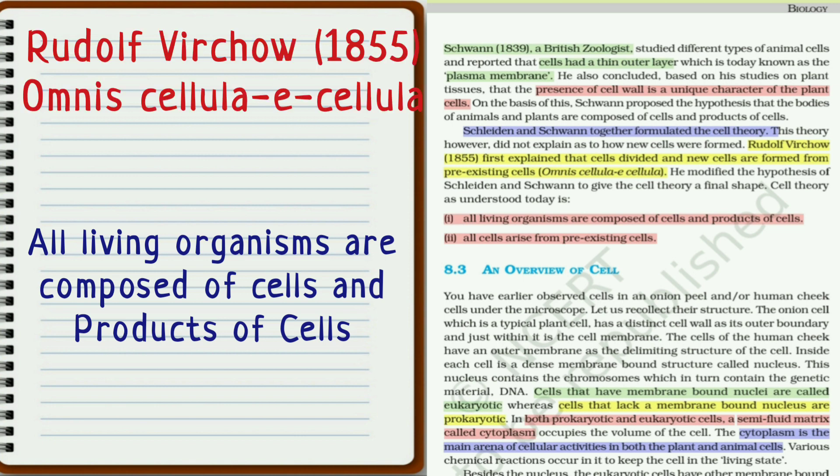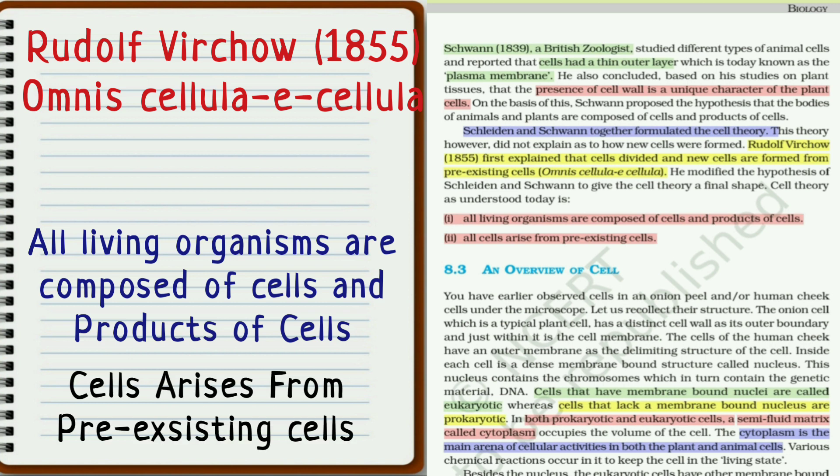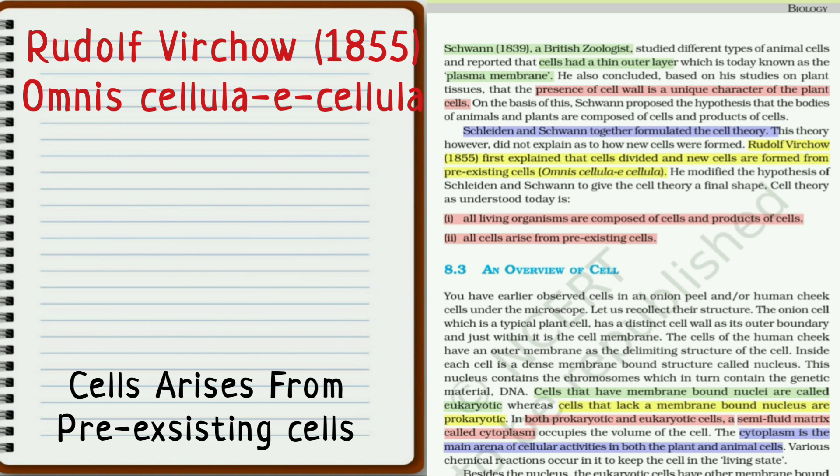Later, Rudolf Virchow in 1855 gave a theory called 'Omnis Cellula e Cellula' in which he explained from where new cells were formed. The statement goes like this: all cells arise from pre-existing cells.